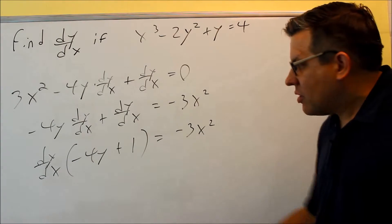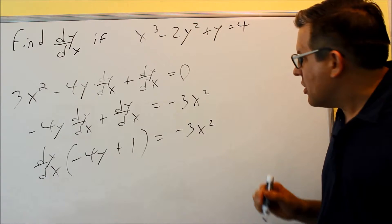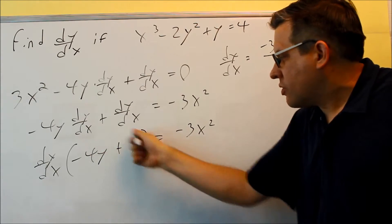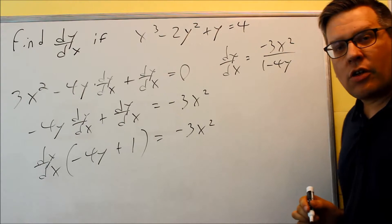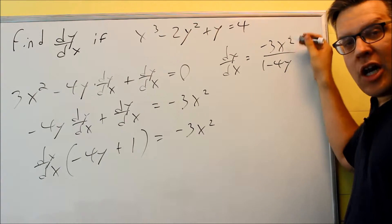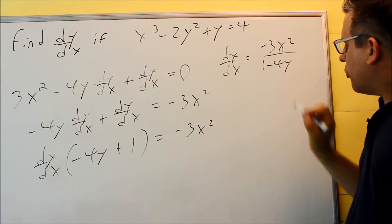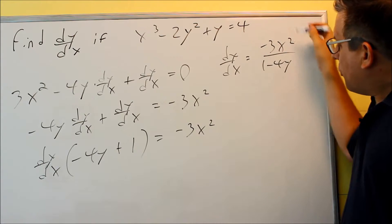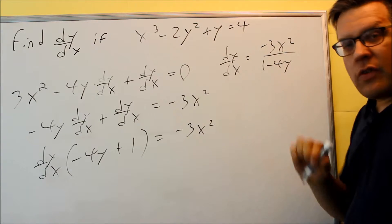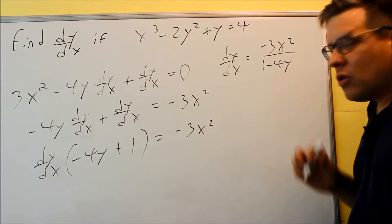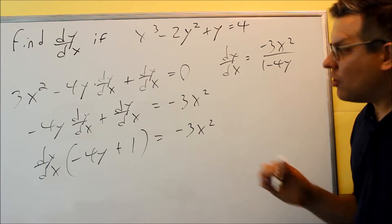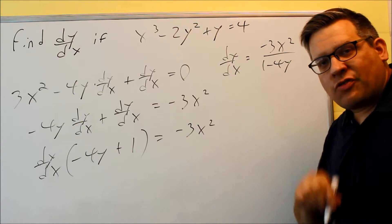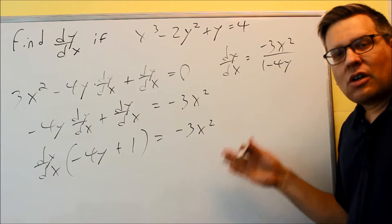We need to solve for dy/dx, so we divide both sides by (negative 4y plus 1). The final answer is dy/dx equals negative 3x squared over (negative 4y plus 1). You could also write this as negative 3x squared over (1 minus 4y), or if you multiply top and bottom by a negative, you get 3x squared over (4y minus 1). What we did was find the derivative without knowing what y actually was — we didn't have to solve for y in terms of x. That's what implicit differentiation allows you to do.